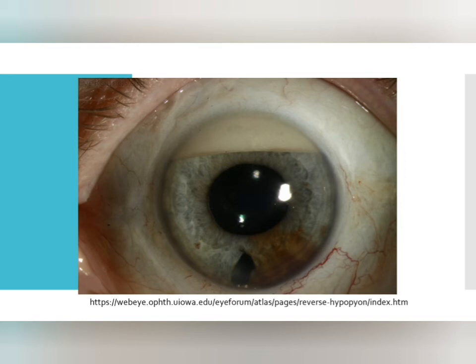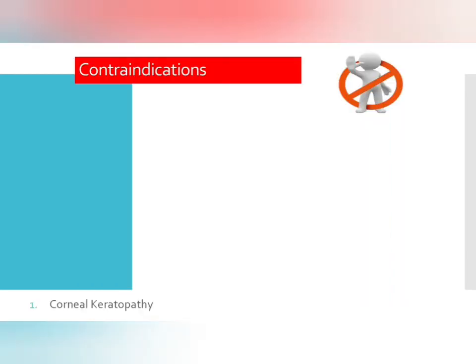For silicon oil insertion: if a patient has undergone vitreoretinal surgery with silicon oil insertion, at the next visit you need to perform gonioscopy to rule out any silicon oil in the anterior chamber or any deposition on the AC angle due to the silicon oil.